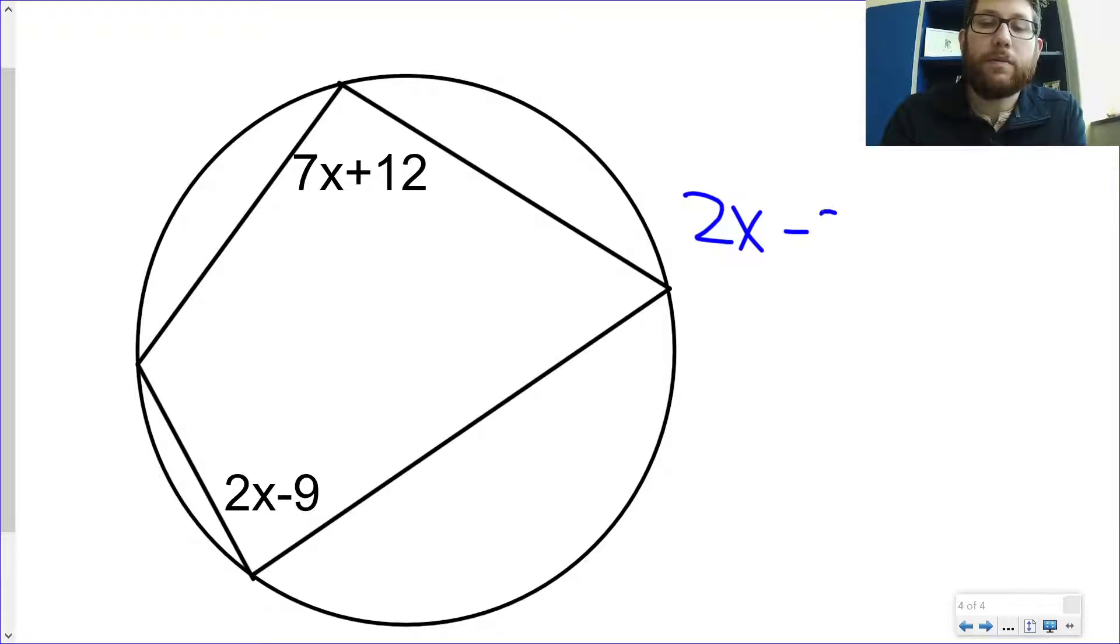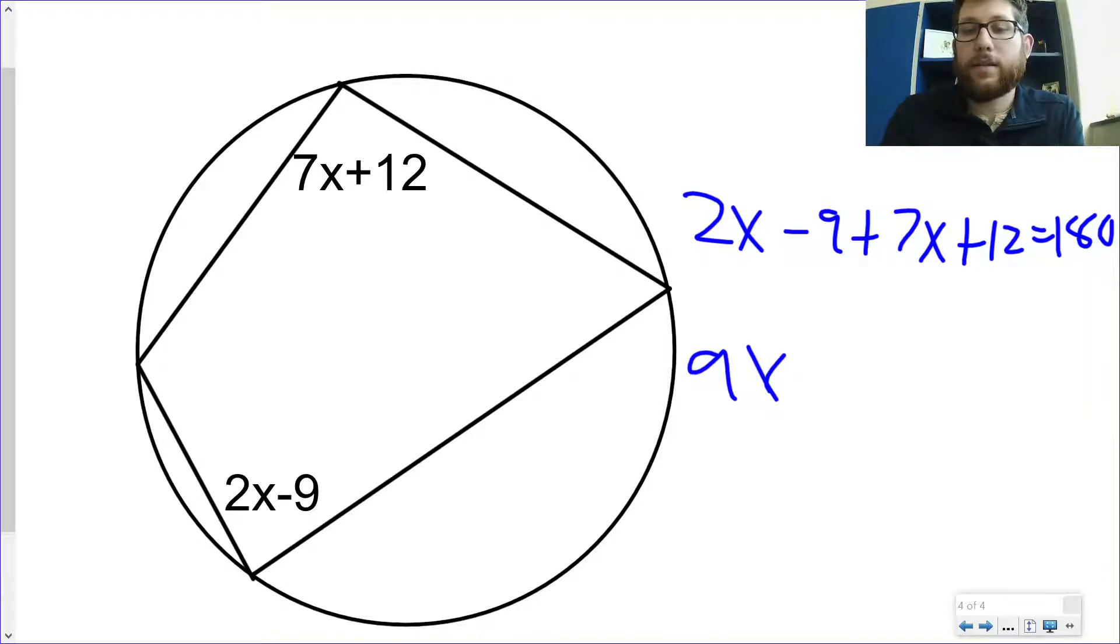So what I'm going to do is, just like any other supplementary problem, I'm going to add these up and set them equal to 180. And then I can solve. 9x plus 3 is equal to 180, and then from there we would be able to solve that. It should come out to 17.